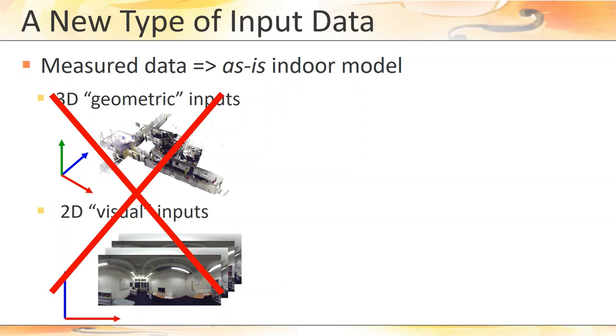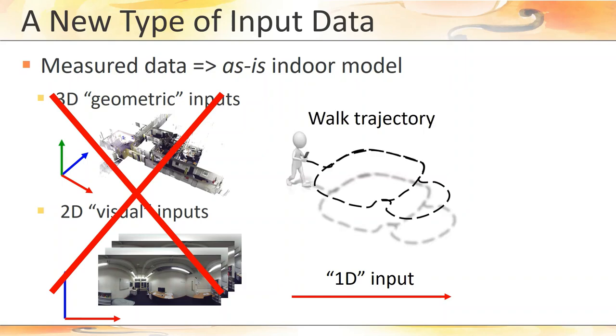What if instead of such rich 3D and 2D inputs we could use something drastically simpler, some data that is in a way one-dimensional in nature and therefore much easier to capture such as the walk trajectory of a person walking through an indoor space. A trajectory can be seen as a 1D object embedded in 2D space if we consider the movement to happen relative to the 2D plane of the floor. A walk trajectory is simple so it should be very easy to capture and it does contain some evidence of the surrounding space.